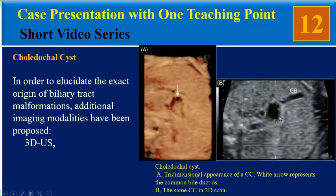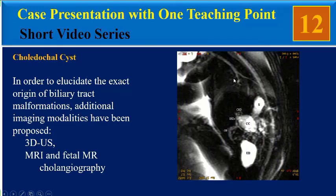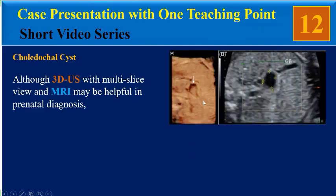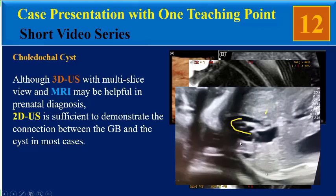This is the 2D ultrasound image of the same choledochal cyst. Another modality is MRI and fetal MRI cholangiography. As we can see in this fetal MRI cholangiography, we can identify the urinary bladder, stomach, gallbladder, common hepatic ducts, intrahepatic ducts, and here is the choledochal cyst. Although 3D ultrasound with multi-slice view and MRI may be helpful in prenatal diagnosis, 2D ultrasound is sufficient to demonstrate the connection between the gallbladder and the cyst in most cases.